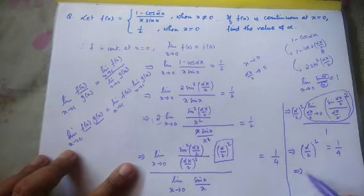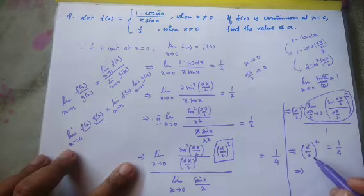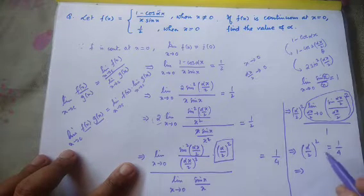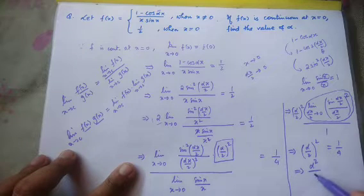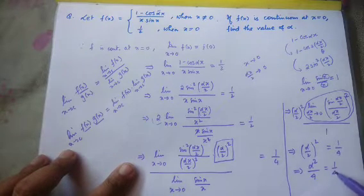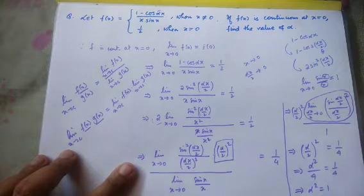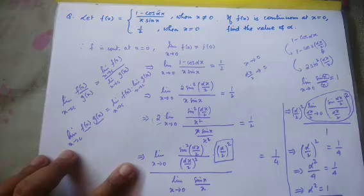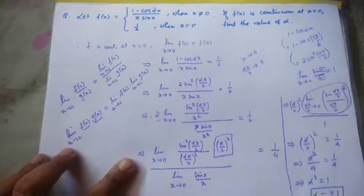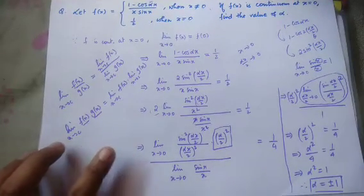Now let me take square root on both sides. So α²/4 equals 1/4, which gives α² equals 1. Therefore the value of alpha is plus or minus 1. When taking the square root we get plus or minus. So this is the answer.